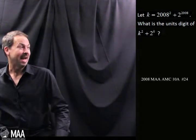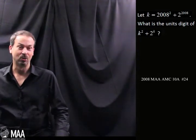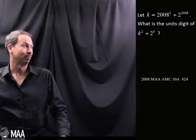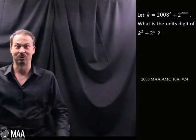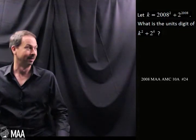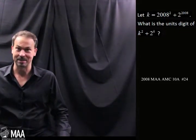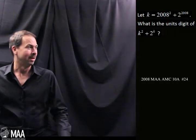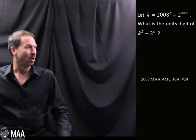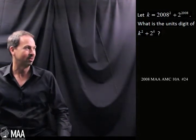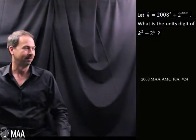Let k equal 2008 squared plus 2 to the 2008. This problem is written for the year 2008. And the question is: what is the units digit of k squared plus 2 to the k?